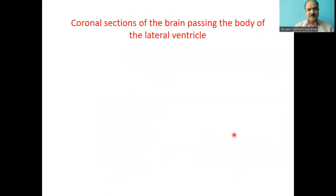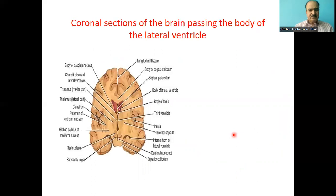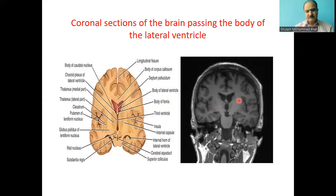This is a coronal section of the brain passing through the body of the lateral ventricle, shown diagrammatically. You can see the corpus callosum forming the roof, the septum pellucidum forming the medial wall, and the floor formed by the caudate nucleus and the thalamus. An MRI picture also shows the various parts of the lateral ventricle.